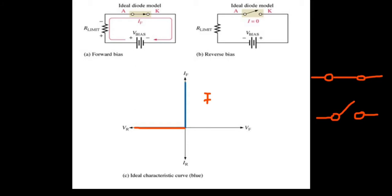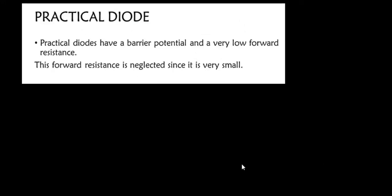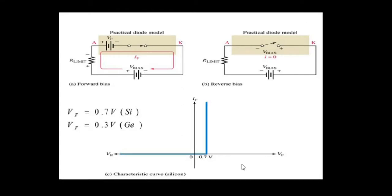Now let's talk about the next one, which is the practical diode. For a practical diode, it does have a biopotential and a very low forward resistance. This forward resistance is very low so we neglect it. The practical diode has a biopotential, so before the practical diode will start to work, that biopotential has to be overcome before current will start flowing through the diode.